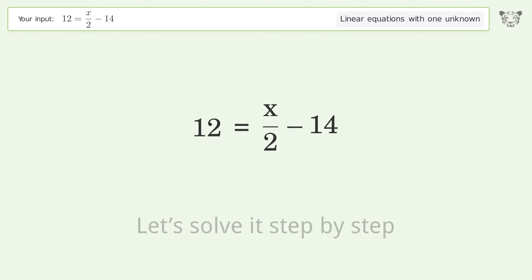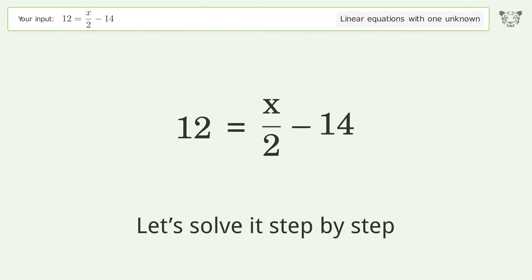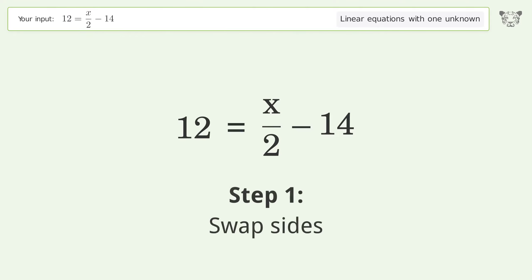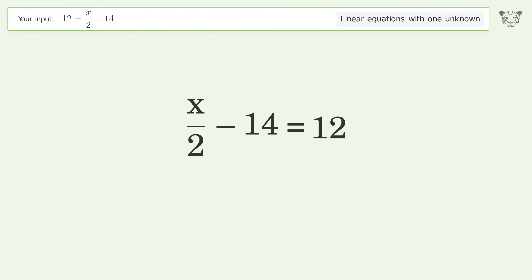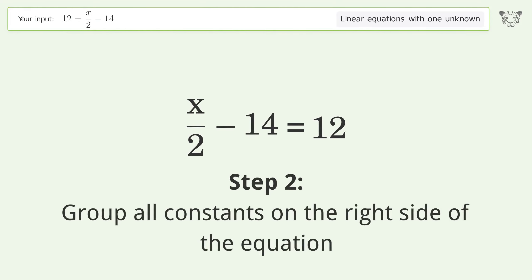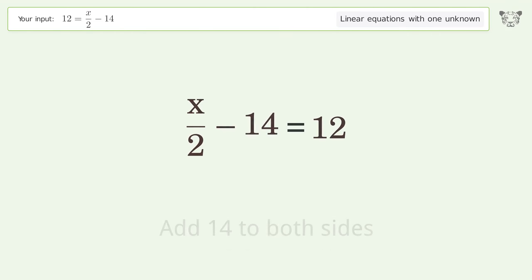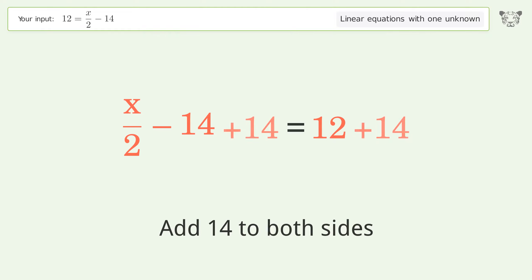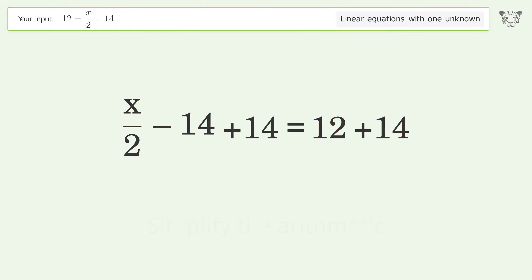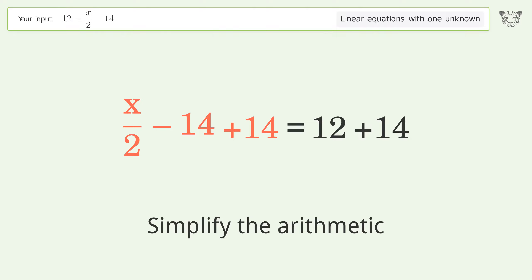Let's solve it step by step. Swap sides, group all constants on the right side of the equation, add 14 to both sides, and simplify the arithmetic.